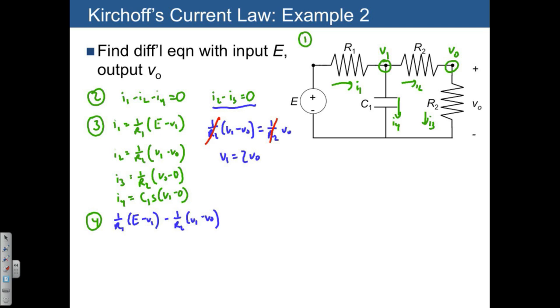Writing these out, we also have C1s times V1 equals 0. Combining all the V1 terms on the left and flipping the sign, we get C1s V1 plus 1 over R1 plus 1 over R2 times V1.